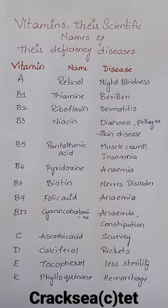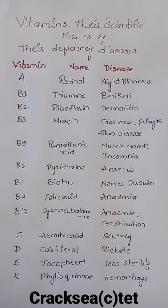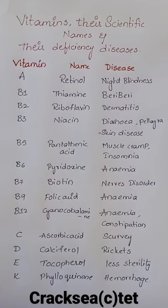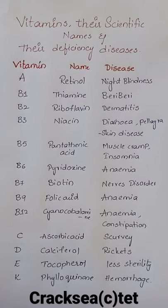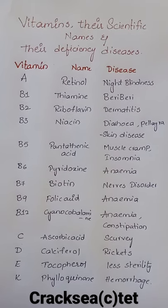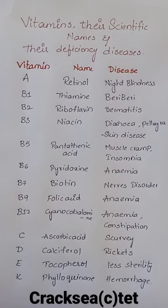B6, scientific name pyridoxine, deficiency disease: anemia. B7, scientific name biotin, deficiency disease: nerve disorder. B9, scientific name folic acid, deficiency disease: anemia.